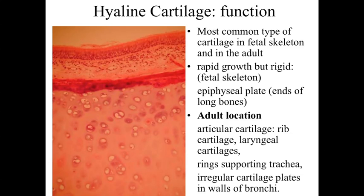You can also find hyaline cartilage in the epiphyseal growth plates, or essentially the epiphyseal plates at the tips of the long bones, where they're looking at the articulation site — the location where two long bones come together and move in relationship to one another within a joint cavity. In the adult, we find hyaline cartilage at the articular cartilage at the end of bones, rib cartilages, laryngeal cartilages, rings supporting the trachea, and irregular cartilage clusters or plates within the walls of bronchi.